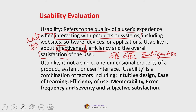It is important to understand that usability is not a single or one-dimensional property of a product, system, or user interface. Usability is a combination of factors: intuitive design — where what is shown matches the real world — ease of learning, efficiency of use, memorability, error frequency and severity, and subjective satisfaction.